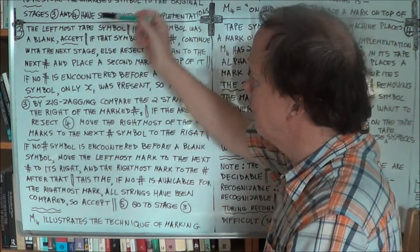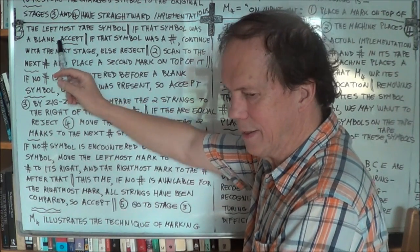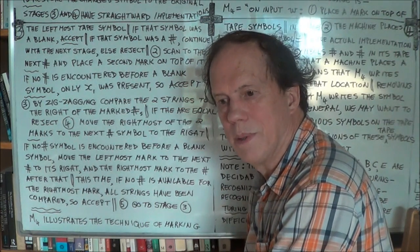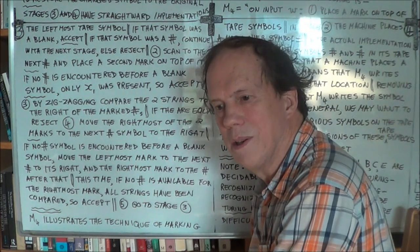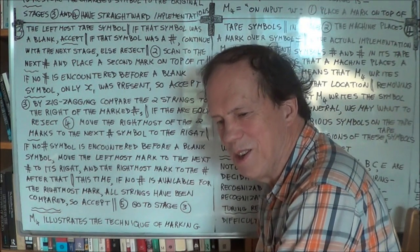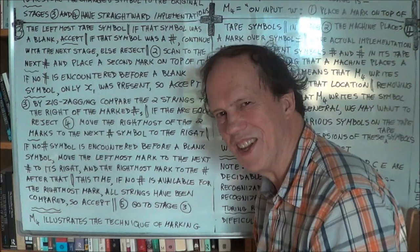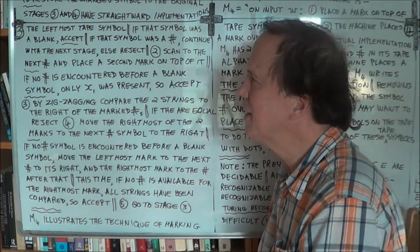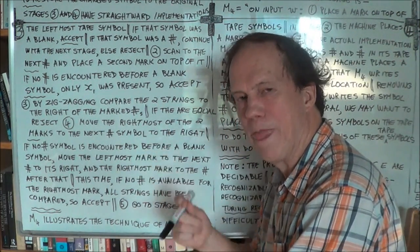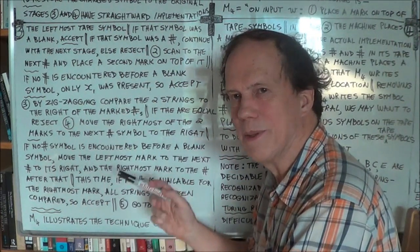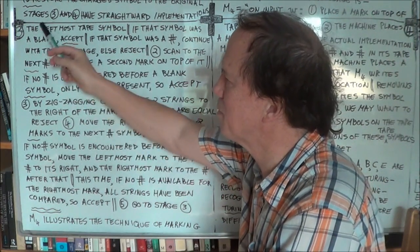Going into more detail: if the very first symbol is a blank, accept — that's a fringe case. There's only one string and it's different from anything else because there isn't anything else. So if your very first square is just blank, accept. That's a special case.